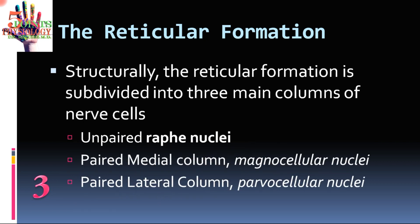Coming to the third point — the anatomical aspect. Structurally, the reticular formation is subdivided into three main columns of nerve cells. The first is the unpaired raphe nuclei, which form the midline column.